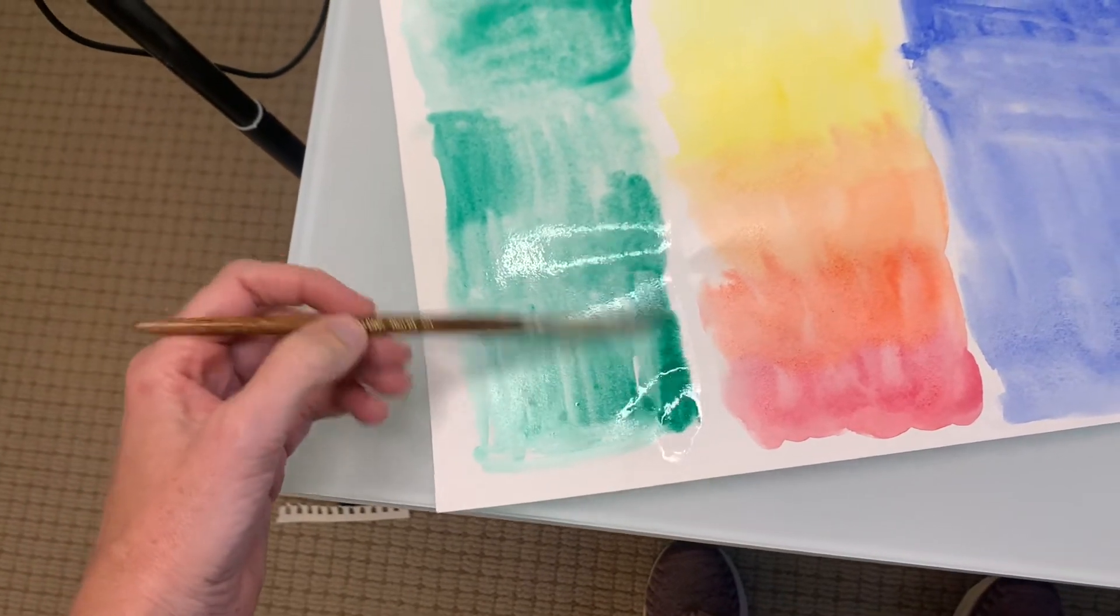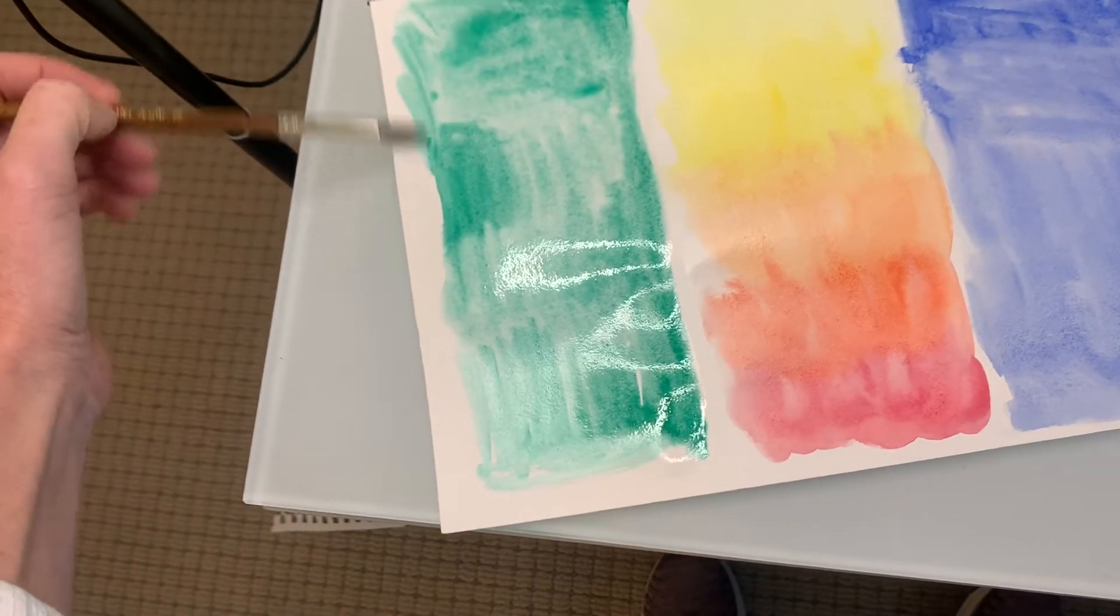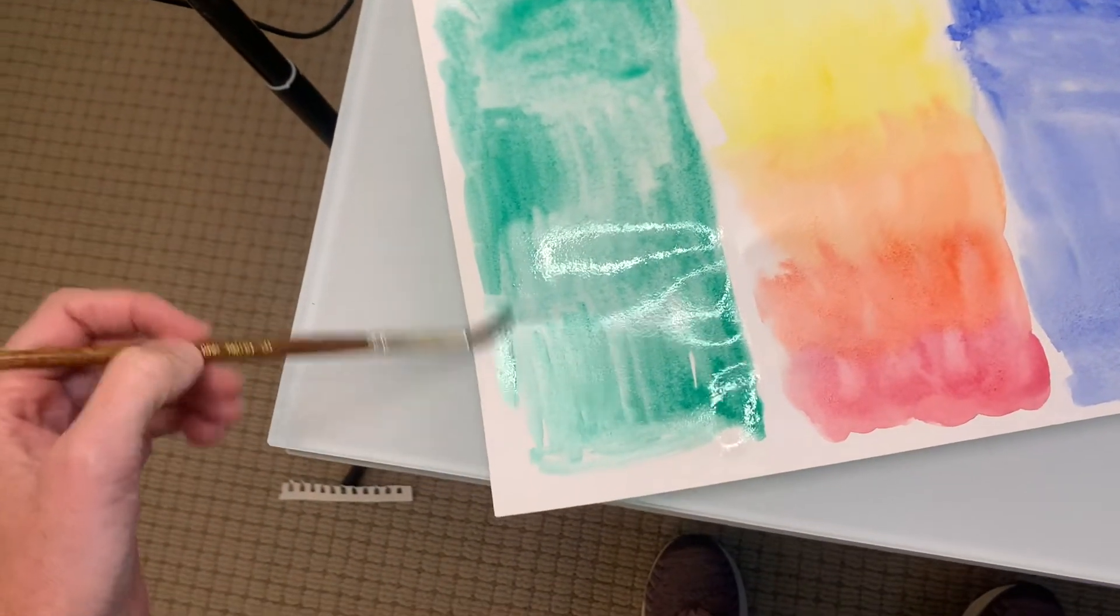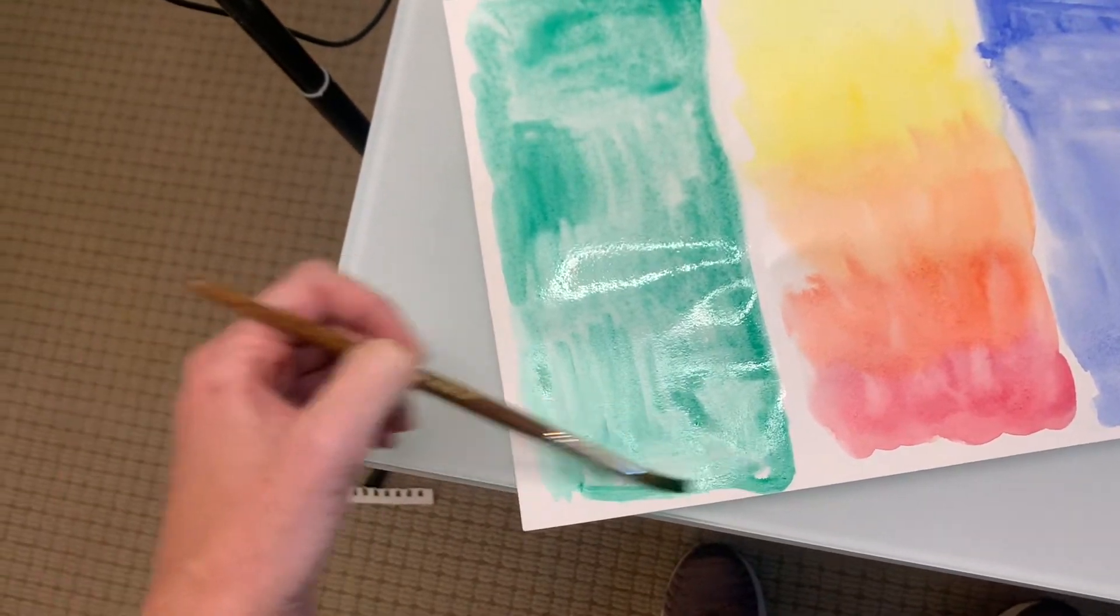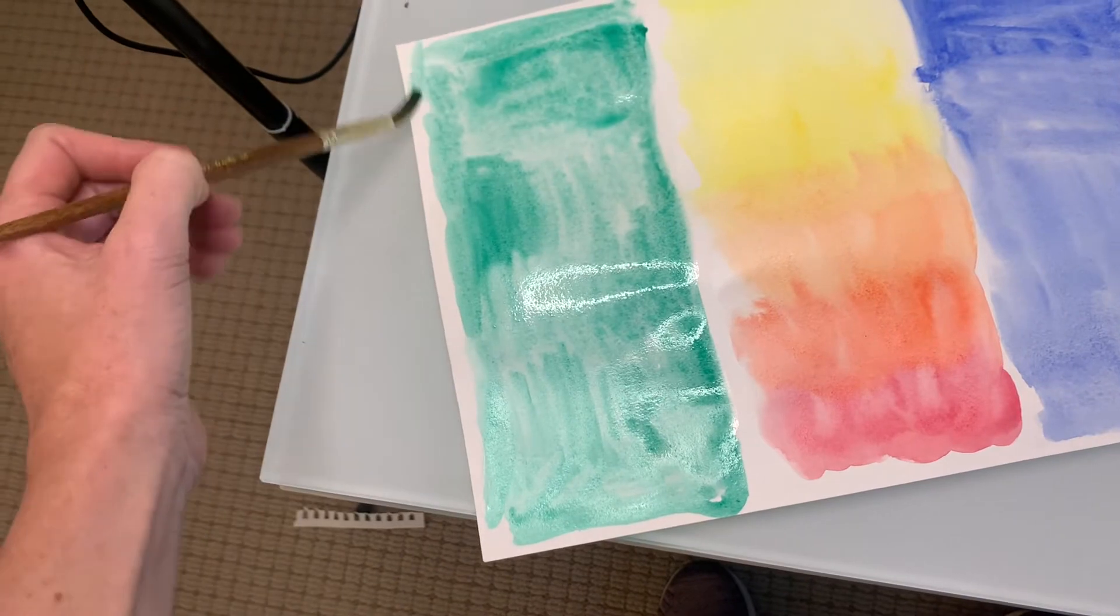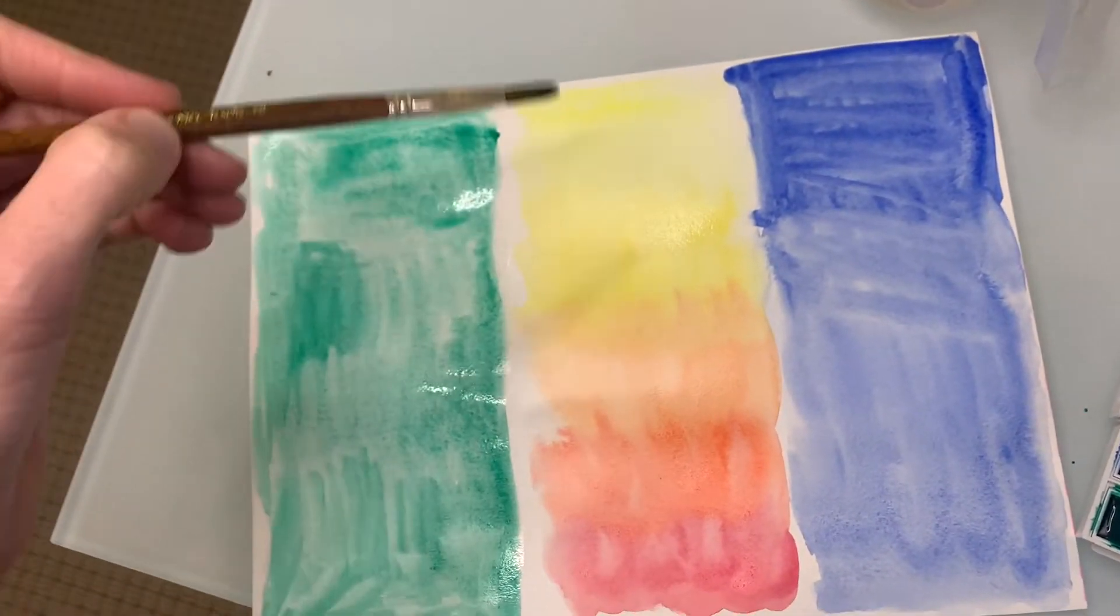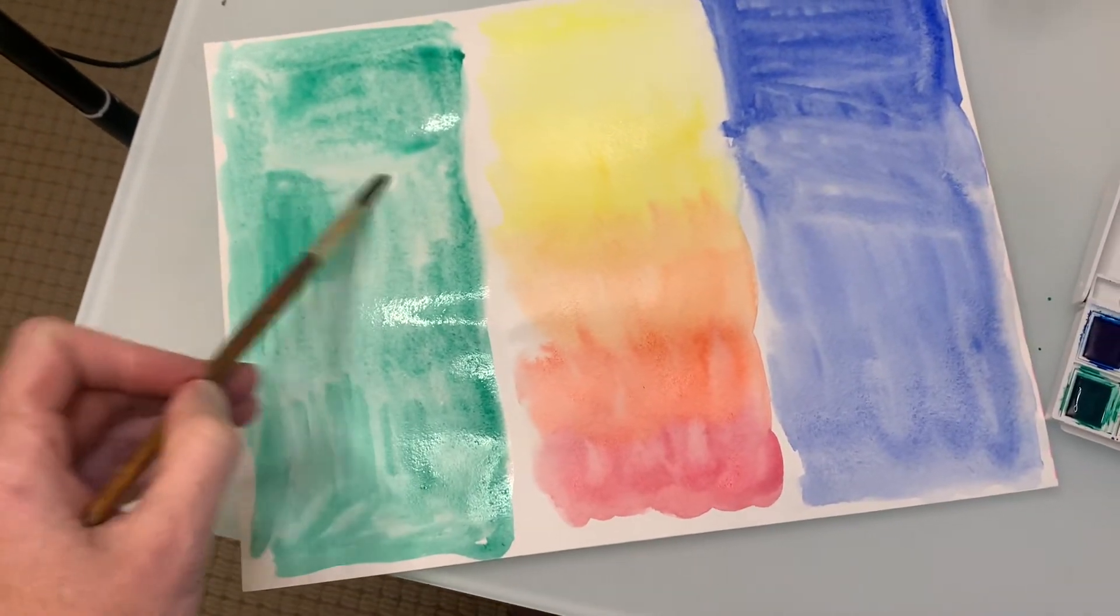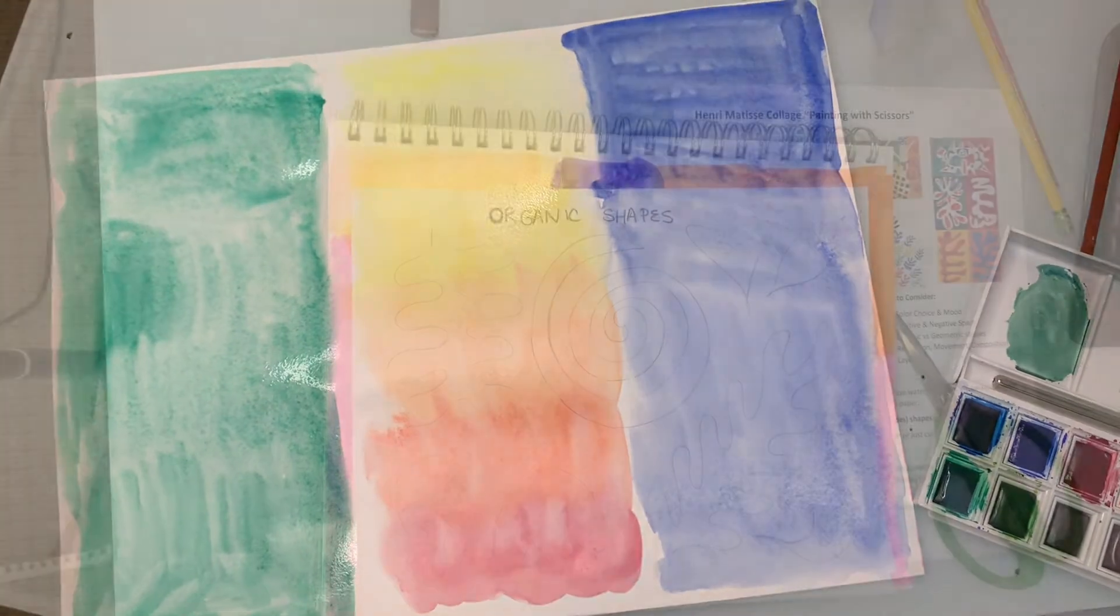It'll make our cutouts look more interesting with the brush strokes and different areas of paint and saturation amounts. Since my background had lots of warm colors, I did mostly cool colors: green and blue, and you can see I did this ombre-like sunset effect here. Now I have to wait for these to dry and then we'll start our cutouts.